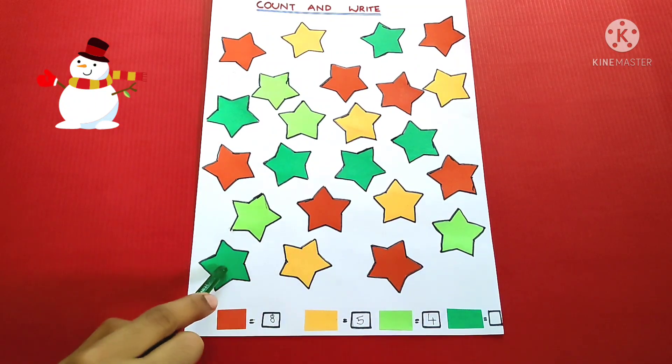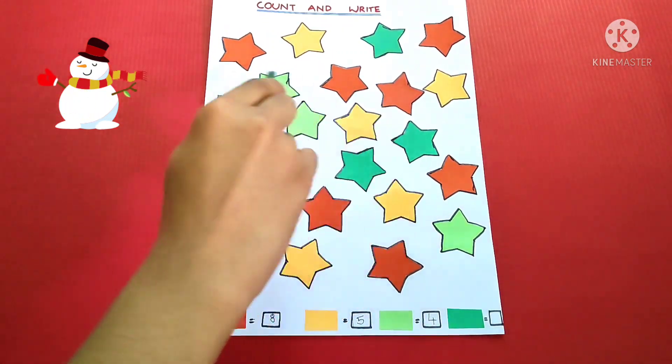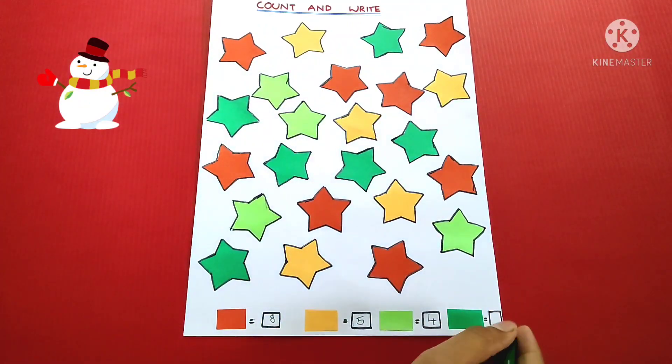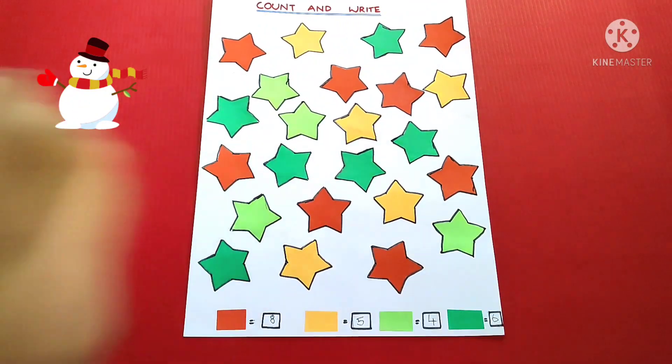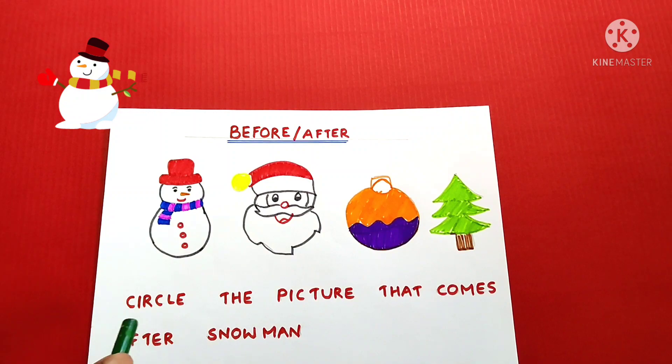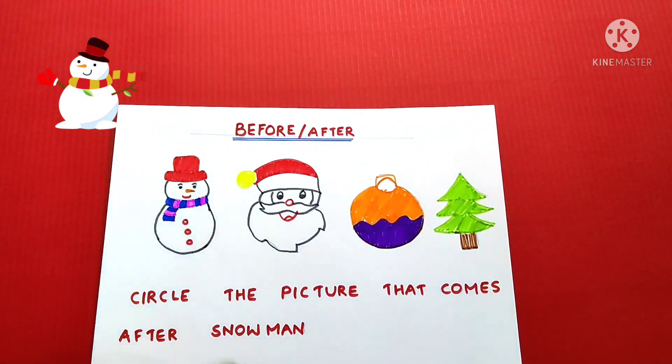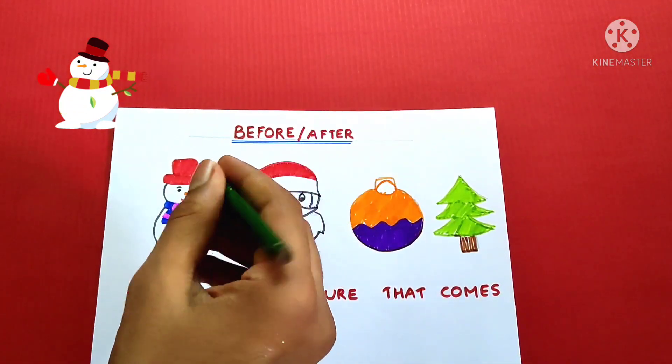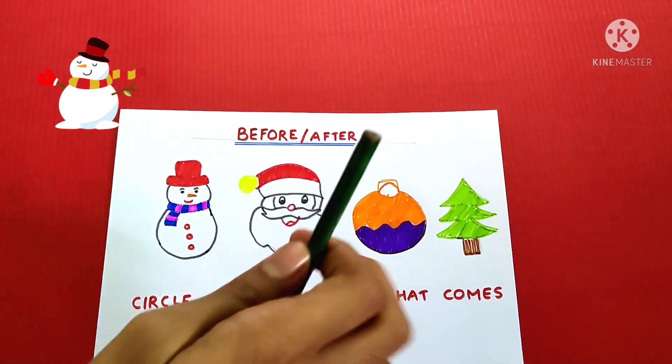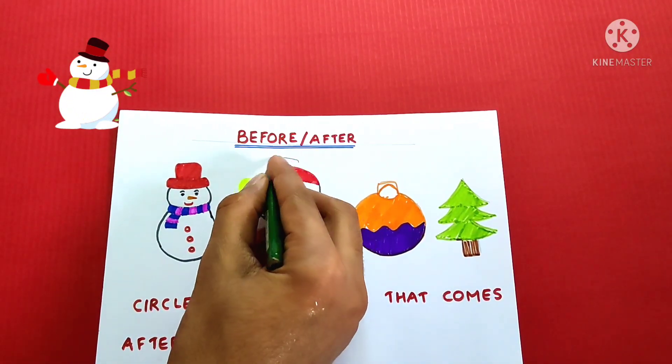Dark green. 1, 2, 3, 4, 5, 6. Circle the picture that comes after snowman. After snowman comes Santa. So we have to circle Santa.